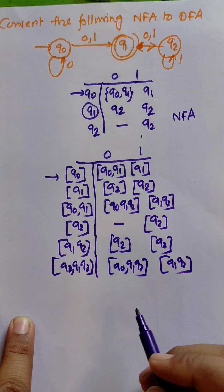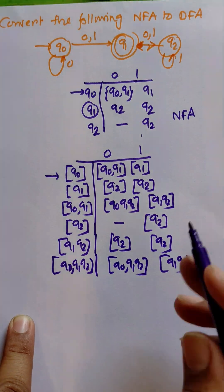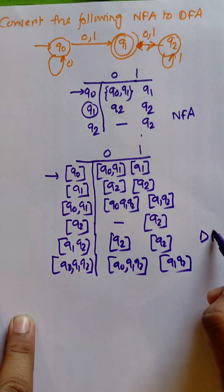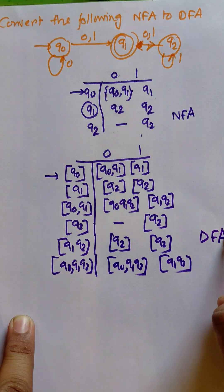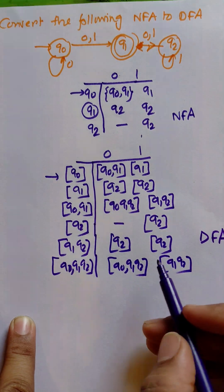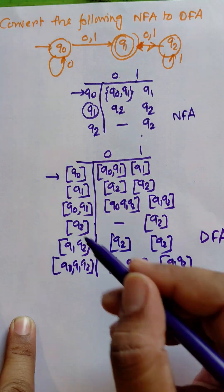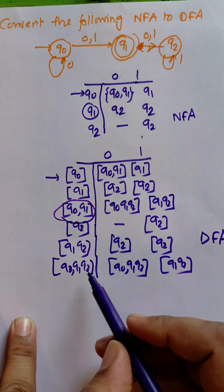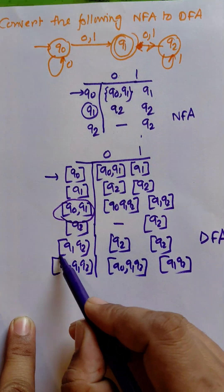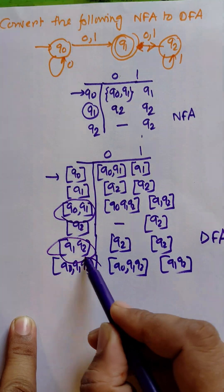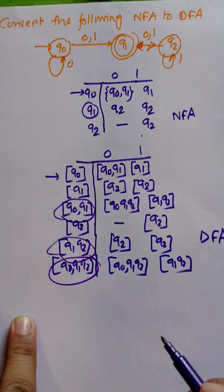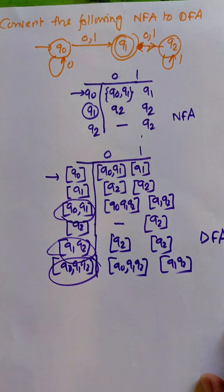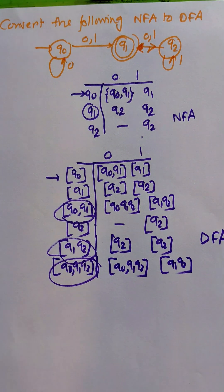And this is the DFA for the given NFA. The final states are those containing q1: q1, {q0, q1}, {q1, q2}, and {q0, q1, q2} are all final states. You can easily draw the diagram from this table. Thank you very much for watching this video.